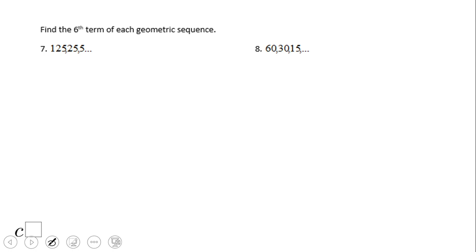Let's take a look at this geometric sequence: 125, 25, 5. Notice we multiply by one-fifth. One over five is the common ratio. So we need to find the sixth term.